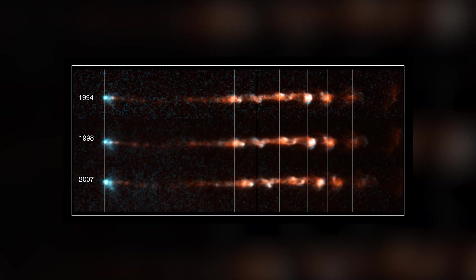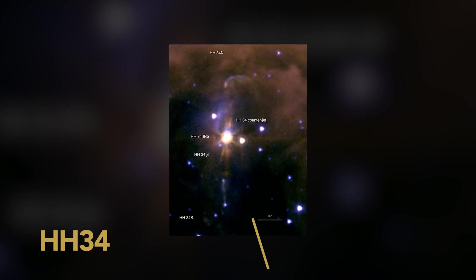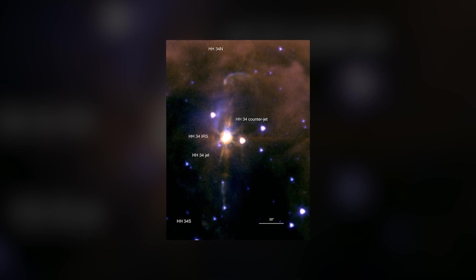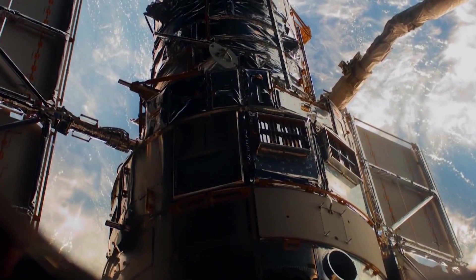And in extreme high definition in 2015, ESA noted. HH34 is about 1,250 light-years from Earth and resides in the famous Orion Nebula, which Hubble has also imaged many times over the decades.